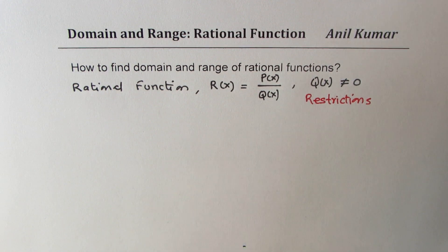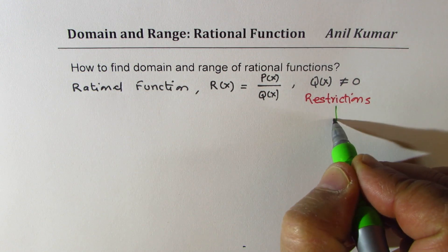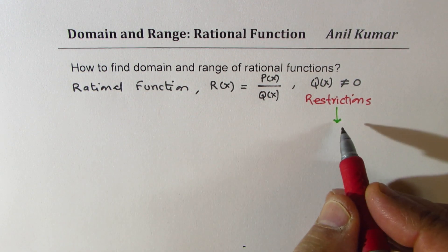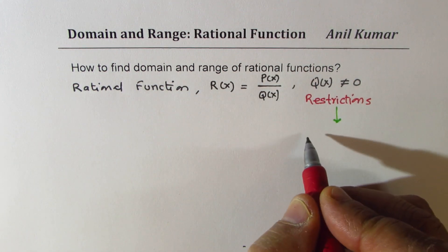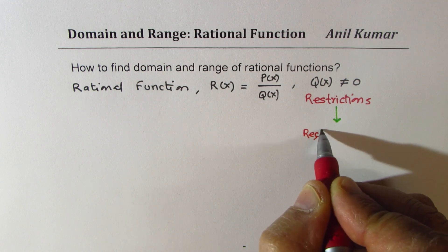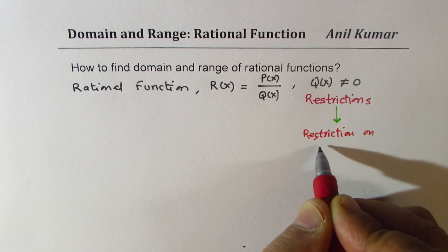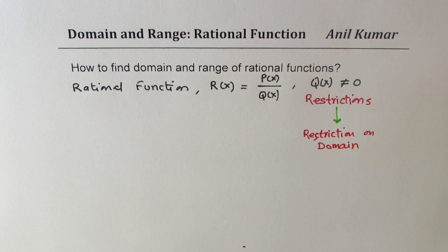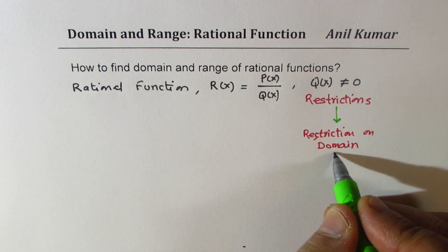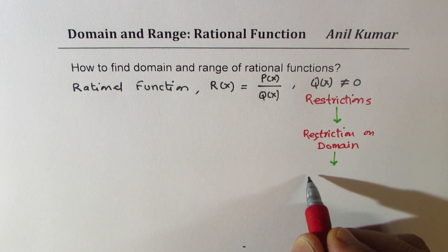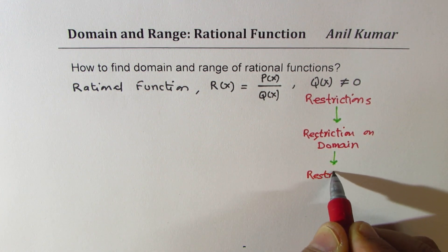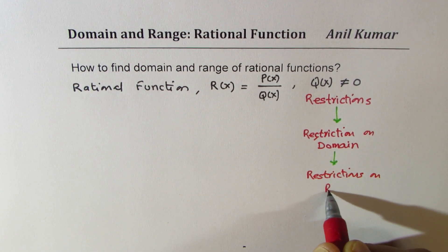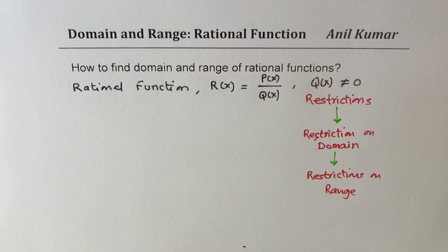These restrictions will actually be restrictions on domain. That means restriction on domain — x will not be equal to some values. Now if x is not equal to some values, then the y value will also be restricted, which will also lead to restrictions on range. So that is why we see that rational functions could have restrictions on both domain and range.